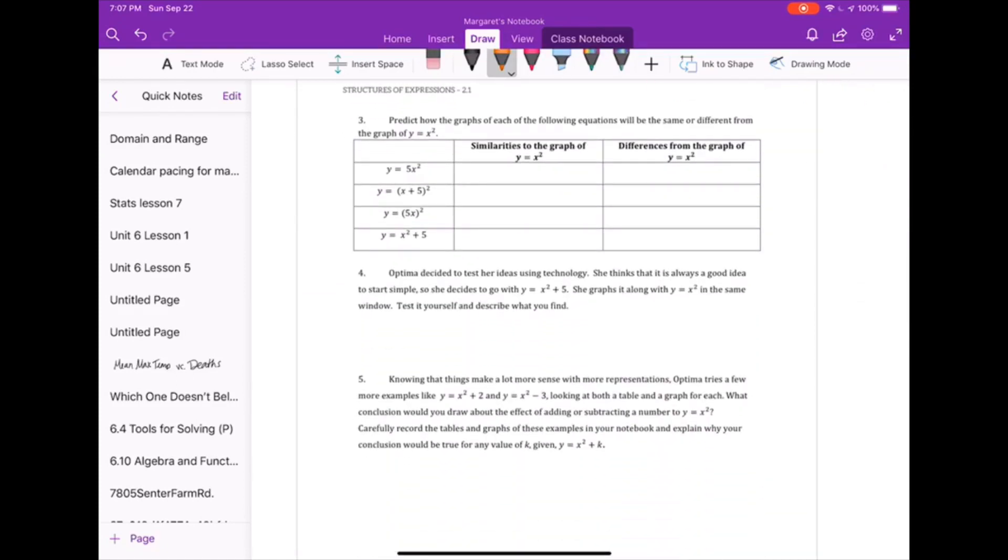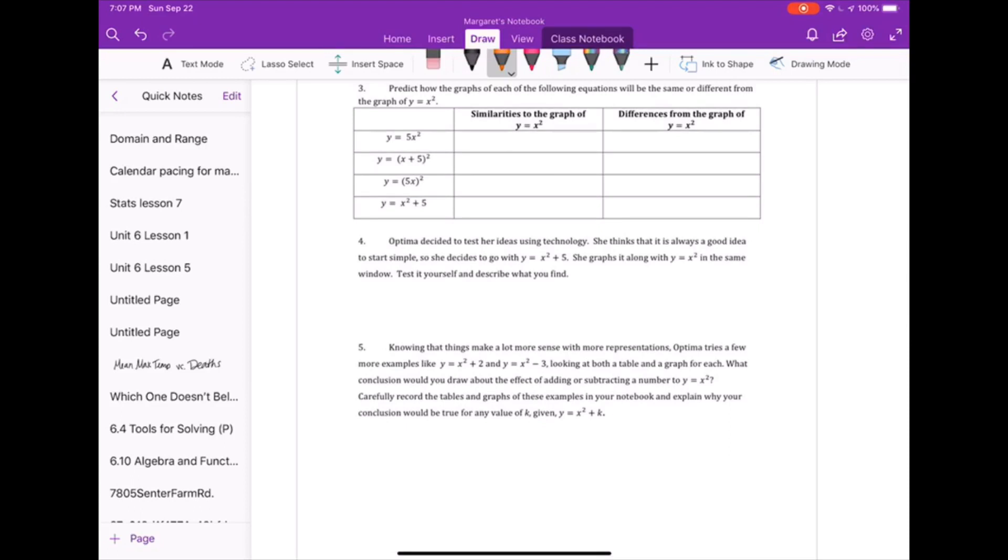So now, I want you to take a moment in number 3 to make your own predictions about what is going to be similar and different between the original equation x squared and the new equations. Fill in these columns. Similarities might include this is the same graph, but it has been moved. Or the differences could be that the vertex is now in another location or that the graph is skinnier. So those are different ideas for your predictions. And then we'll go look in technology in a moment.